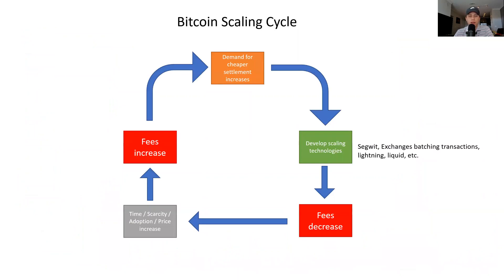I created a short cycle outlining how Bitcoin appears to go through a fee cycle or a scaling cycle. Starting in the bottom left corner, we can see that as time goes on, as scarcity, adoption, and price increase — meaning more Bitcoin halvings occur, meaning less coins are being issued — and over time more people begin to understand Bitcoin and decide to buy and hold some. As this happens, sometimes rather rapidly during bull runs, fees on the network increase.